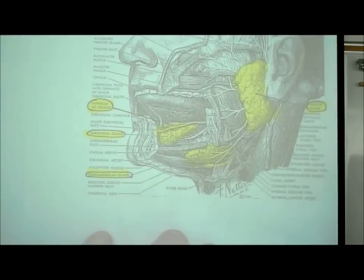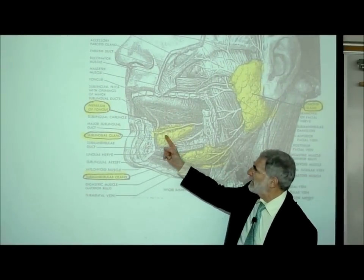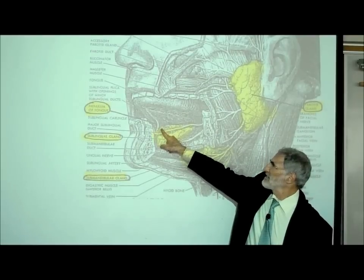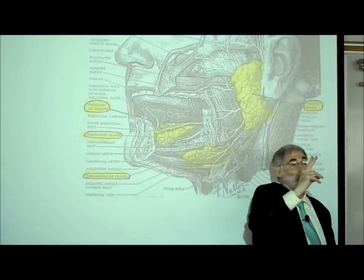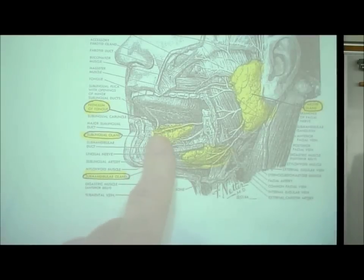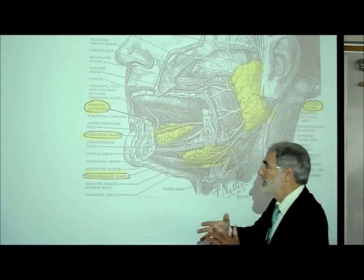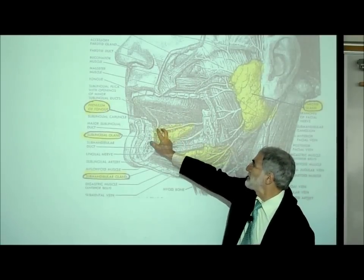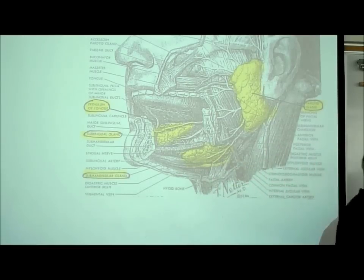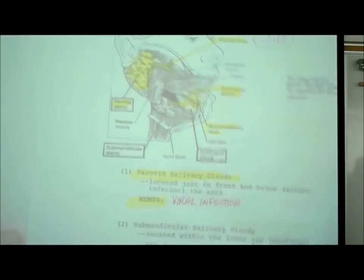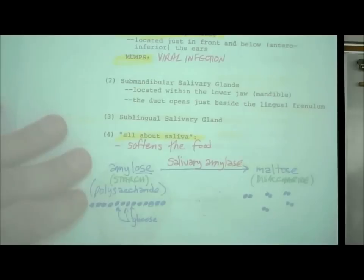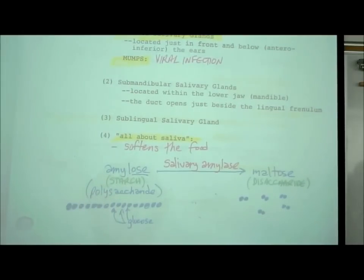We also have the submandibular salivary gland and the sublingual. In this picture you can see where the saliva comes out through an opening — there's a pair of openings on both sides of the lingual frenulum. If you look in a mirror and raise your tongue, you'll see those two little openings where saliva comes out from the sublingual salivary gland.